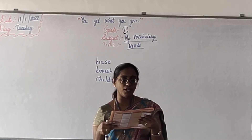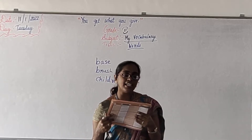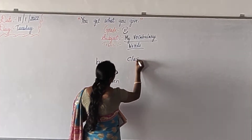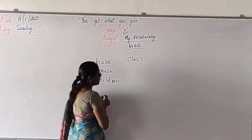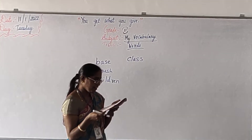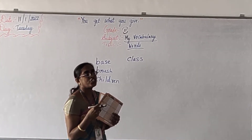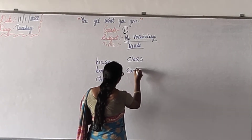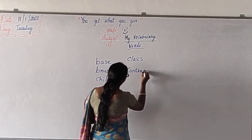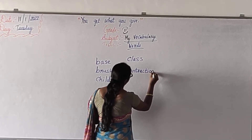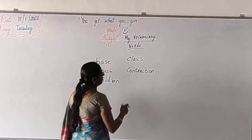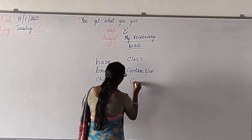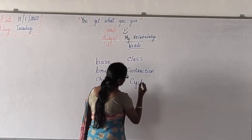Turn to the next page. Next word we have? Class. Classes. Then next we have contraction. C-O-N-T-R-A-C-T-I-O-N. Then next we have cycle. C-Y-C-L-E.